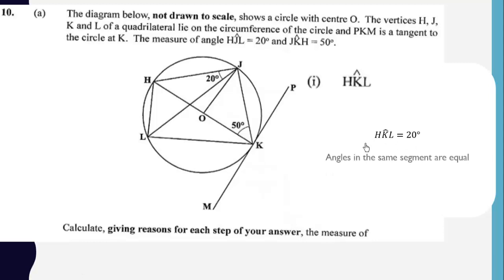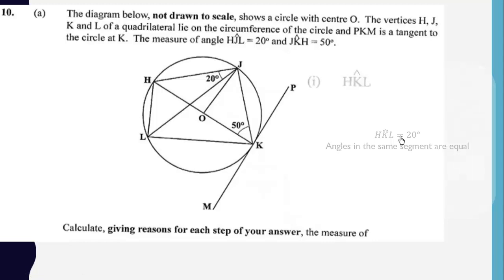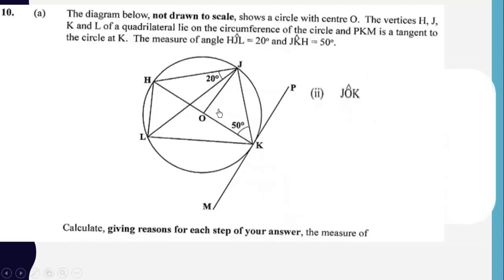Now we are supposed to calculate angle JOK. We can calculate this angle using different approaches, but one way is to use the isosceles triangle JOK, where this angle is 50 degrees.